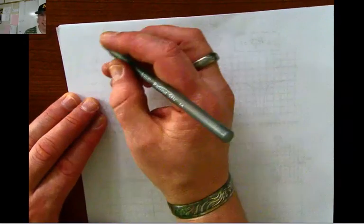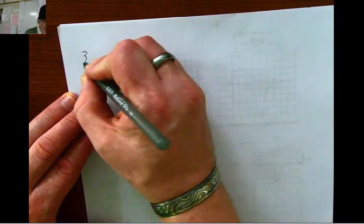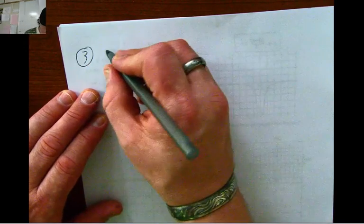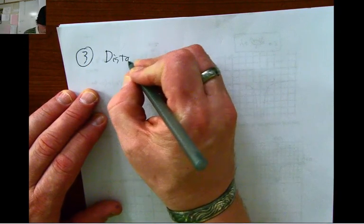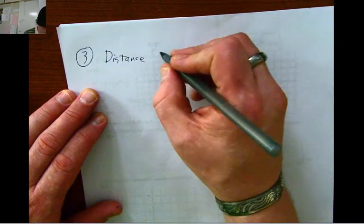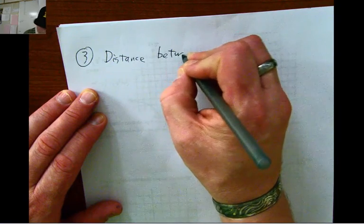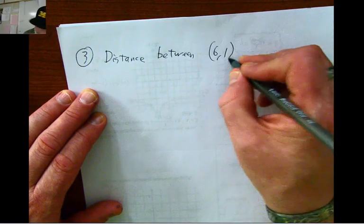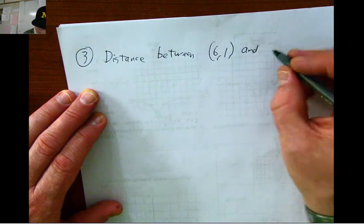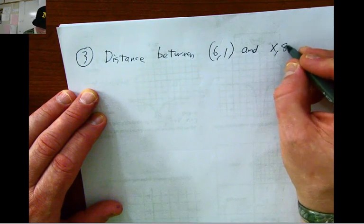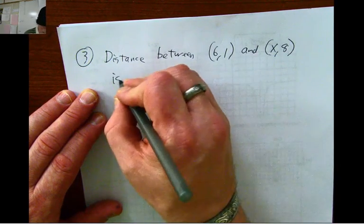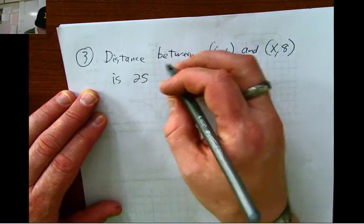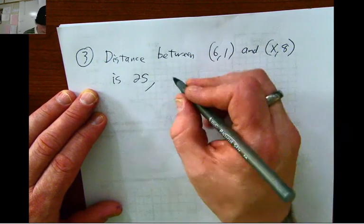I do have one backwards problem for you. And in these ones, instead of you looking for the distance, they give you the distance and then one and a half of the coordinates. So, it'll read like this. The distance between (6, 1) and (x, 8) is 25. And you've got to find x.